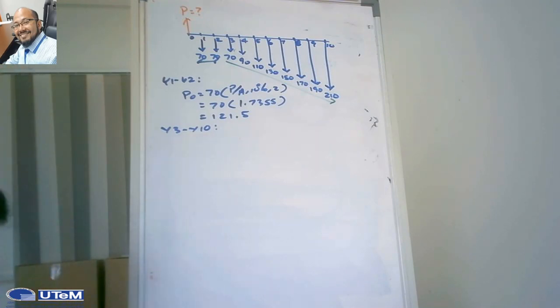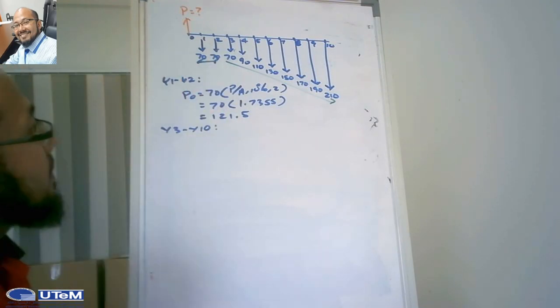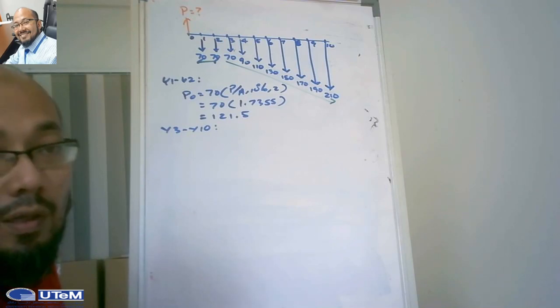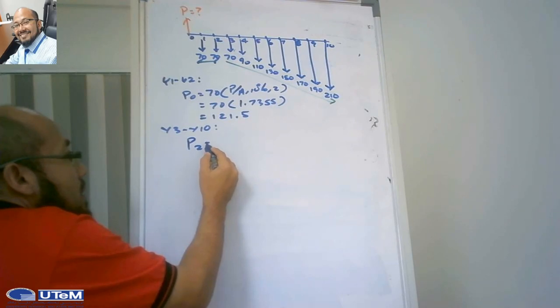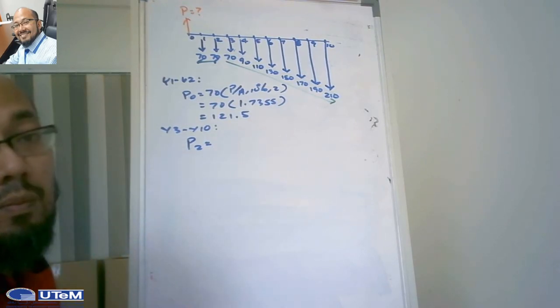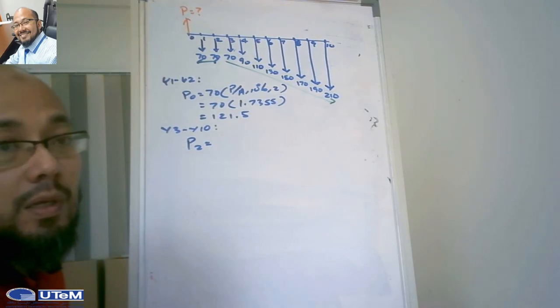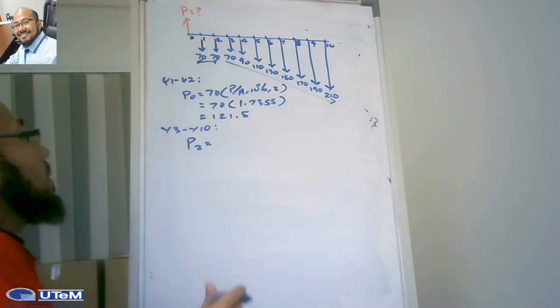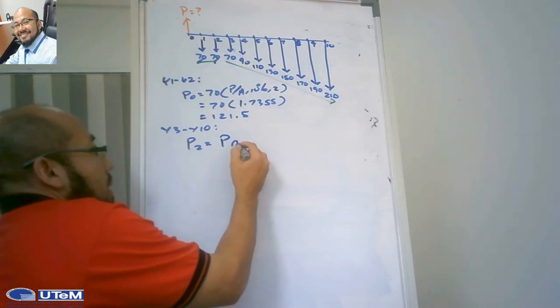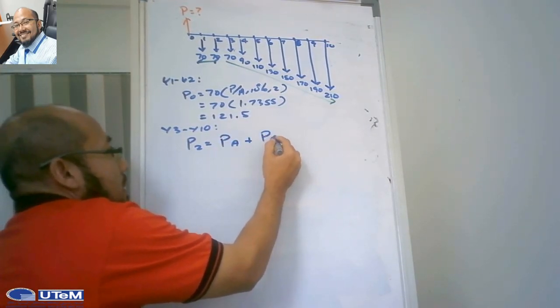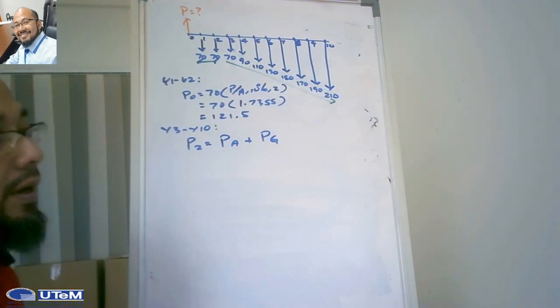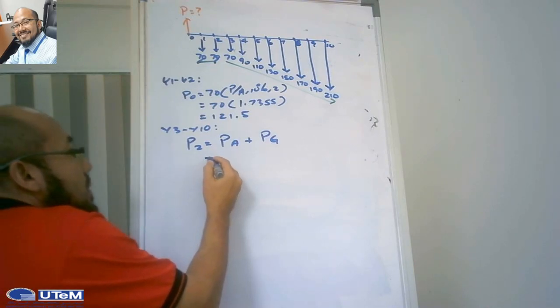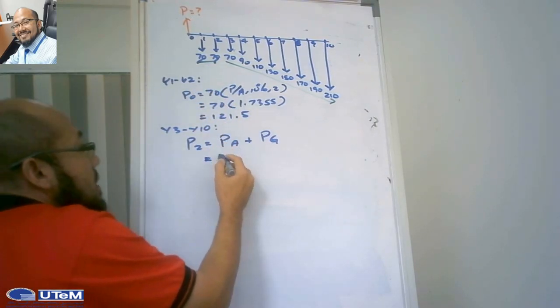Because the 70 dollar starts at year 3, we transfer the cash series from year 3 to year 10 to P2, the present factor at year 2. So P2 equals PA plus PG, involving arithmetic gradients.